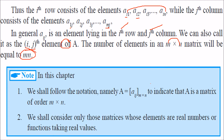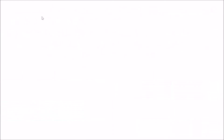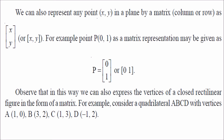We follow the notation A = [a_ij]_{m×n} in the rest of the discussion. When we want to represent any point (x, y) in a plane, we can write it as a row [x, y] or as a column matrix. For example, the point (0, 1) can be represented as [0, 1] in row form or as a column.